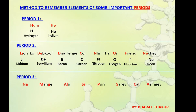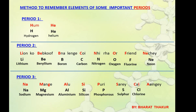For period 3 — 'Na maange alu si poori sare kal aayenge': 'na' for Sodium, 'maange' for Magnesium, 'alu' for Aluminium, 'Si' for Silicon, 'poori' for Phosphorus, 'sare' for Sulphur, 'kal' for Chlorine and 'aayenge' for Argon. So by learning these lines we can arrange the elements of each period in the correct order. We are studying only up to period 3 because in our syllabus, questions come from elements up to period 3.